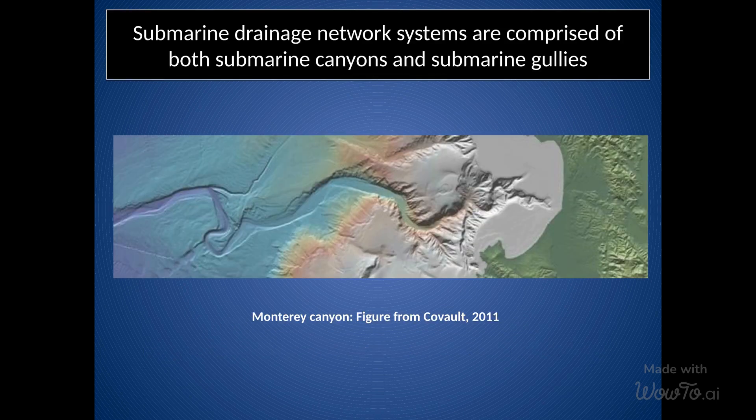Submarine canyons are deep and steep valleys that are found along the continental margin. They are formed by a variety of processes, including erosion and tectonic activity. Submarine gullies, on the other hand, are much smaller valleys that are often formed in areas of high topographic relief. They can be thought of as small feeder channels to the larger submarine canyon system. An example of a well-known submarine canyon system is the Monterey Canyon off the coast of California.